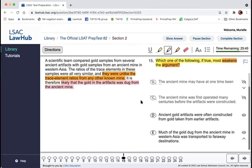Okay. D, ancient gold artifacts were often constructed from gold taken from earlier artifacts. So this could kind of fit with C in that we could have this turnover where the gold still stays the same. But ultimately that gold had to come from somewhere in nature.